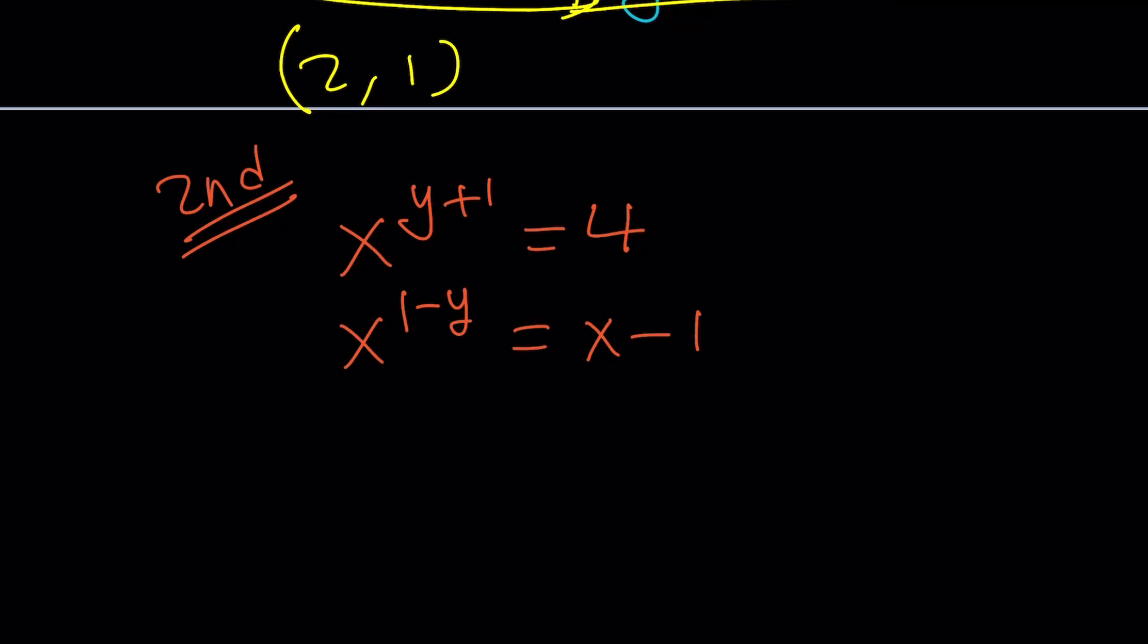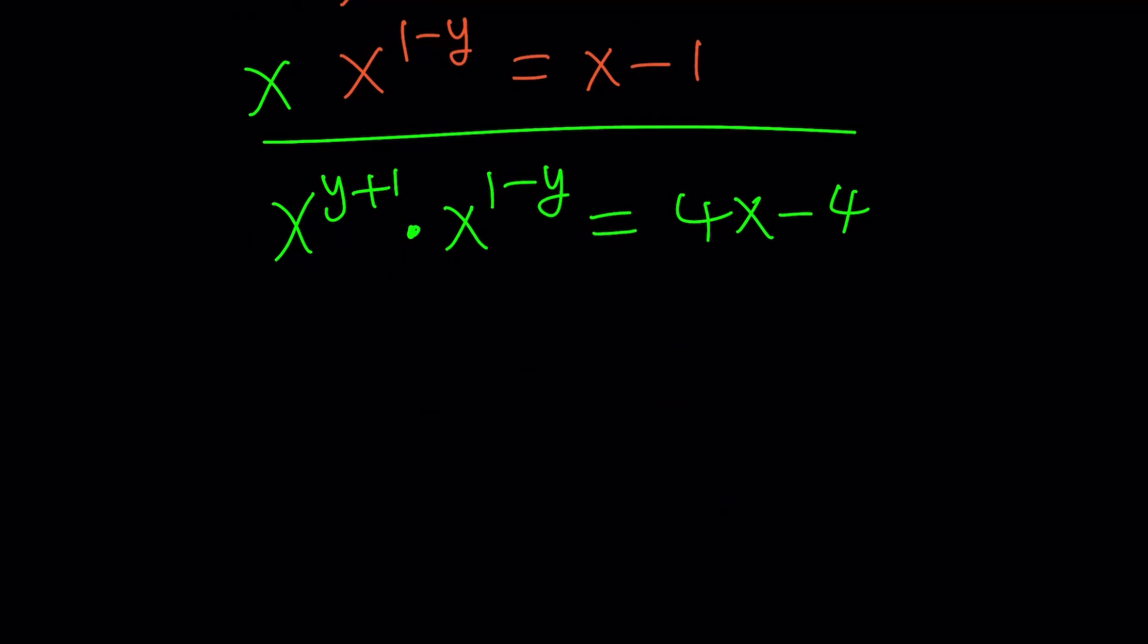Now, instead of isolating x to the y, we can multiply these equations. The motivation behind it is the fact that when I do, I'm supposed to add the exponents. When you multiply two powers with the same base, you add the exponents. But guess what? The exponents cancel out. So y cancels out. And then we end up with x squared equals 4x minus 4.